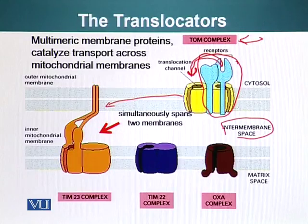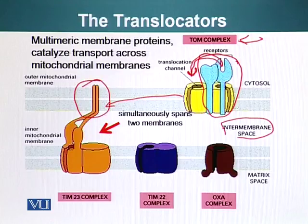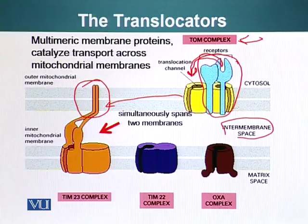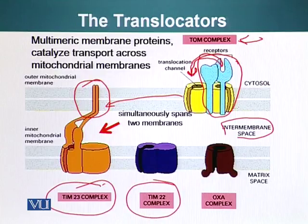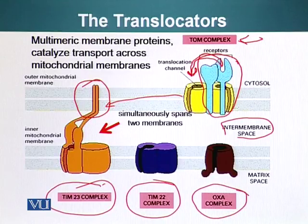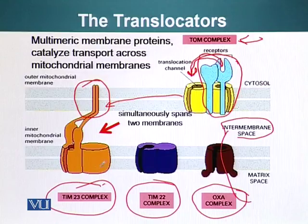The components of this complex span both the inner mitochondrial membrane and the outer mitochondrial membrane, as you can see here. TOM and TIM23 complexes work in conjunction to import proteins into the mitochondrial matrix. TIM stands for translocator inner membrane. We have a couple of different types of TIMs — TIM23 complex and TIM22 complex. There is also another protein called the OXA complex, which is responsible for transporting proteins from the matrix to the inner membrane space.